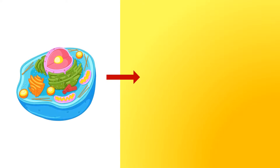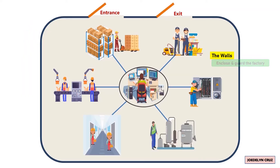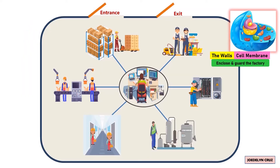In the cell-as-factory analogy, the walls that enclose and guard the factory are parallel to the cell membrane. The cell membrane also encloses the cell and protects it from the outside environment.